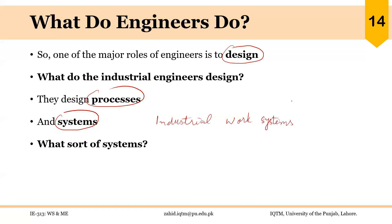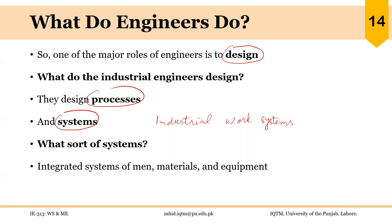What is meant by a work system? These are systems comprising humans, materials and equipment. You can call them production systems or manufacturing systems, but that would limit the focus. One important point that distinguishes industrial engineers from other engineers is that a lot of focus in this design is on humans — the human aspect of these systems.